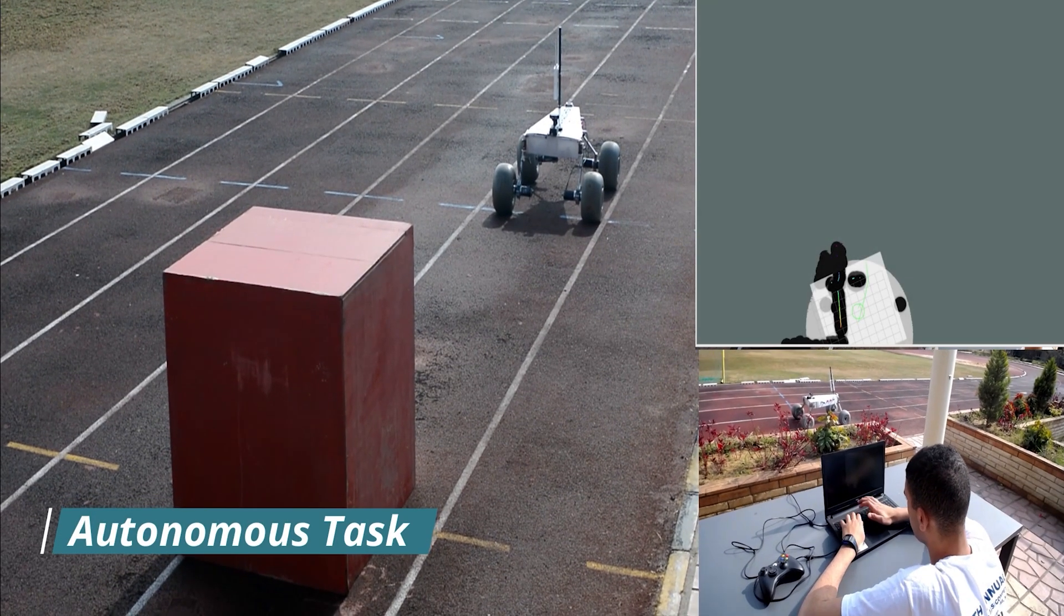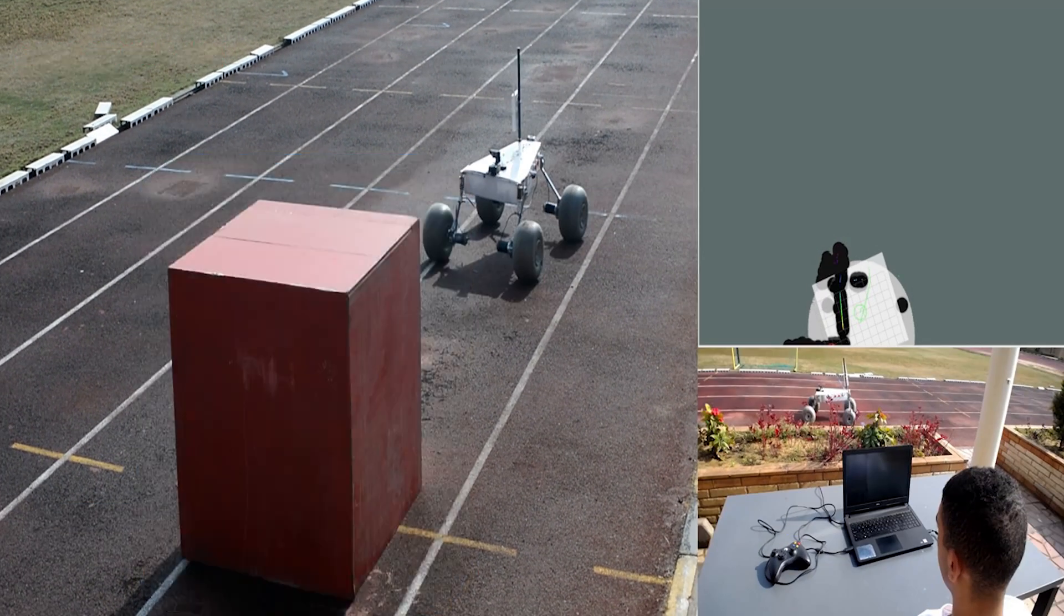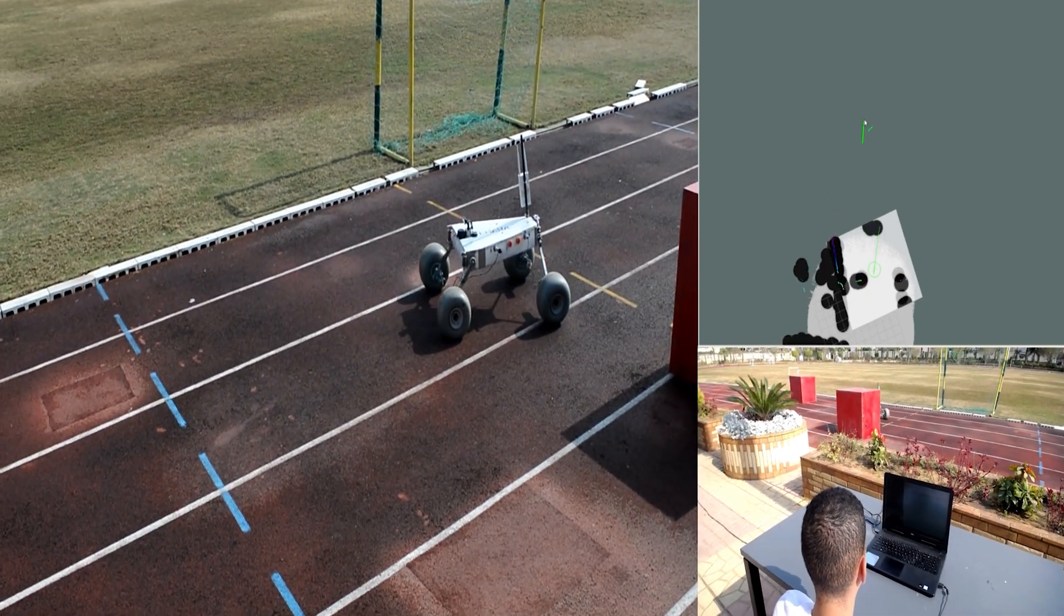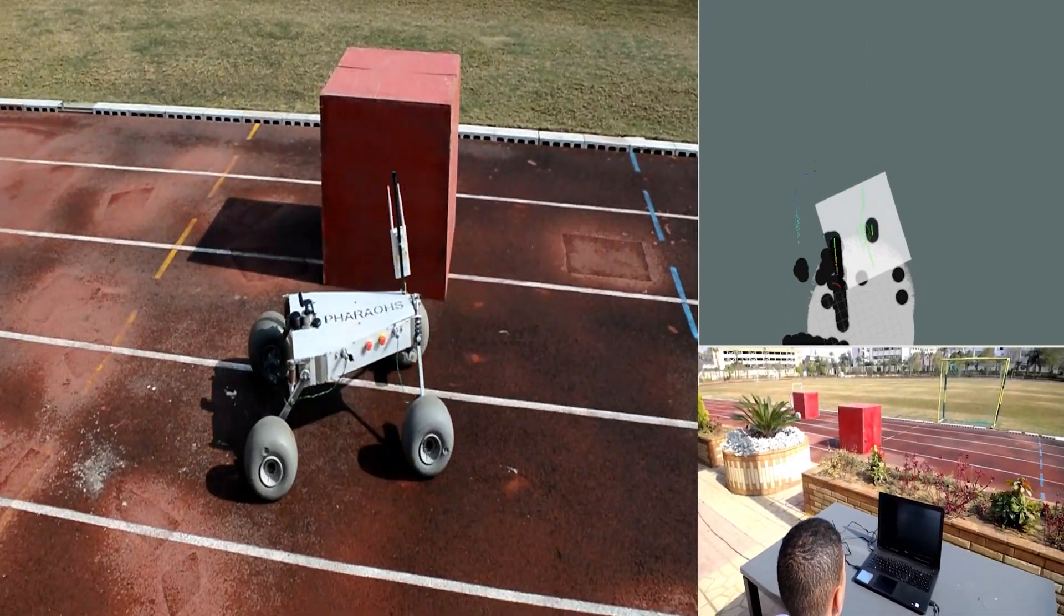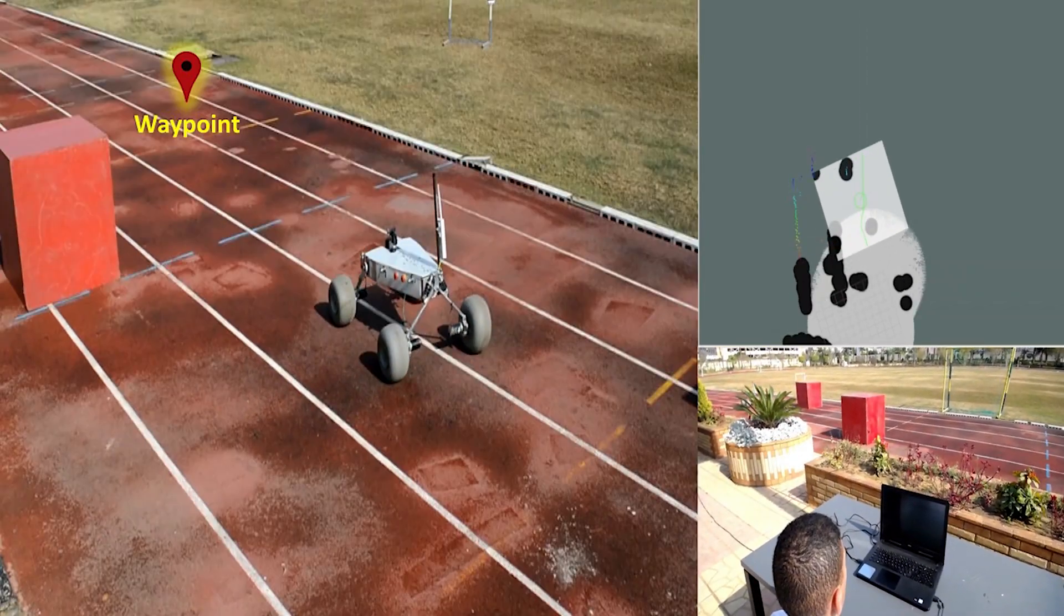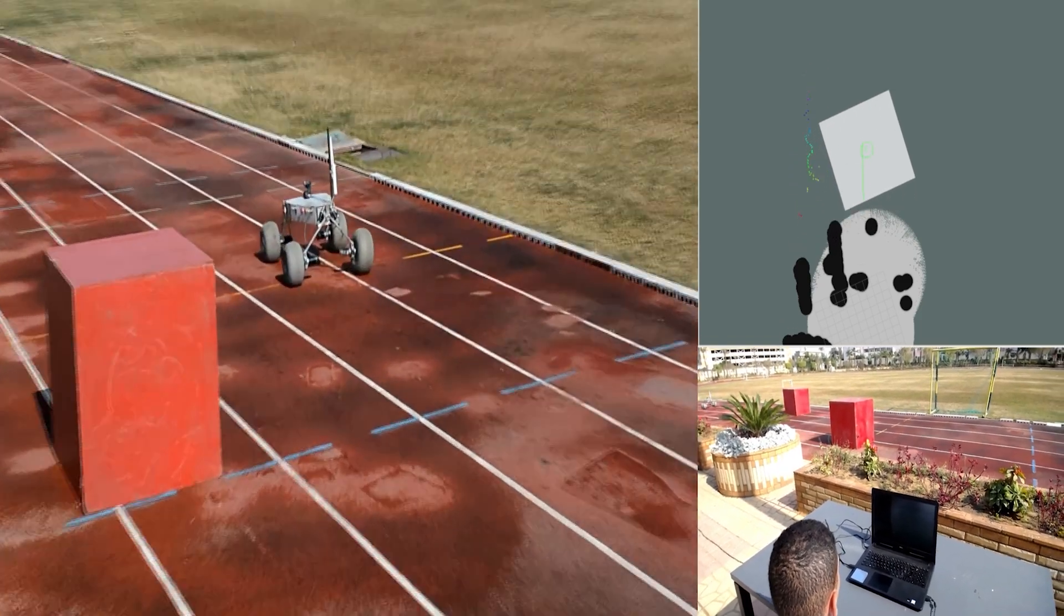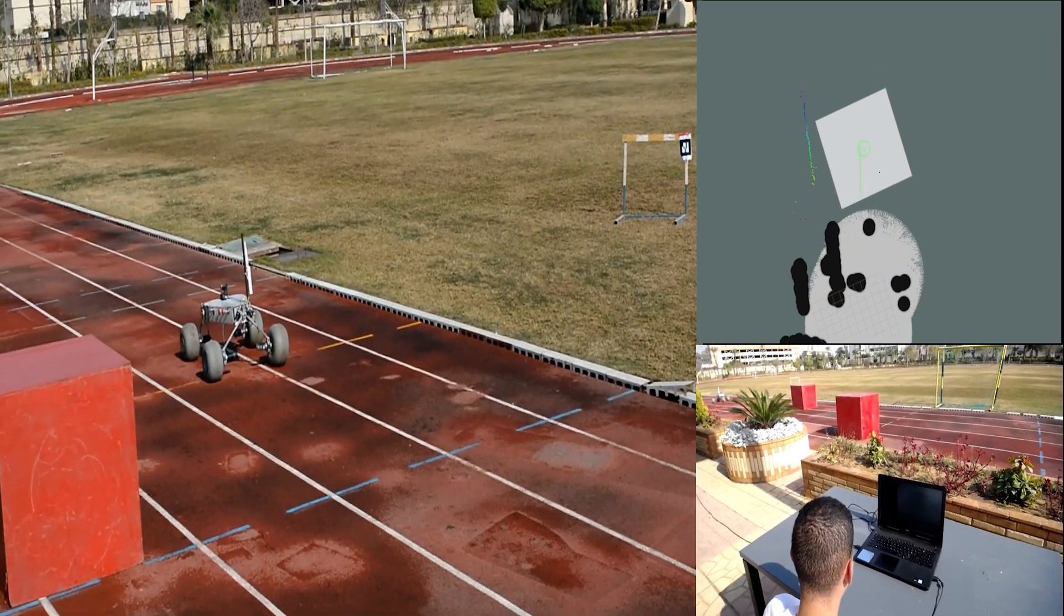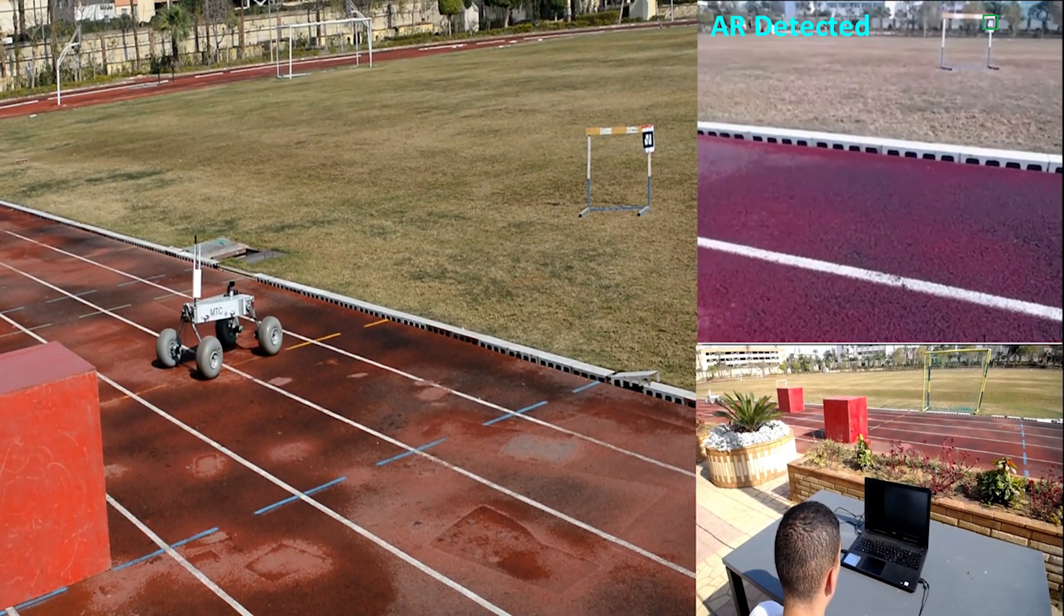For the autonomous task, localization is done through sensor fusion between lidar, GPS, IMU, and stereo vision using extended Kalman filter. The rover is then visualized on Google Maps using GPS sensor to ensure the rover maintains its path. AR detection is implemented using a convolutional neural network.